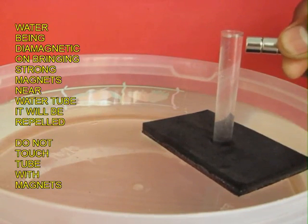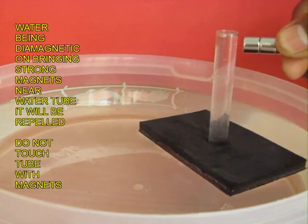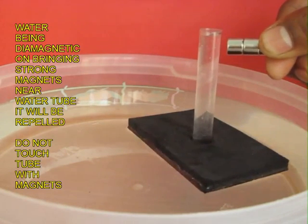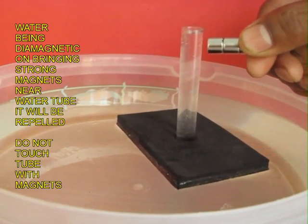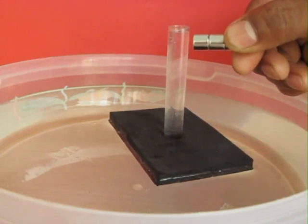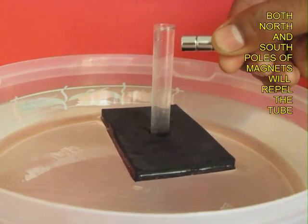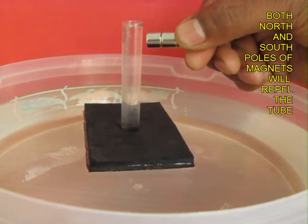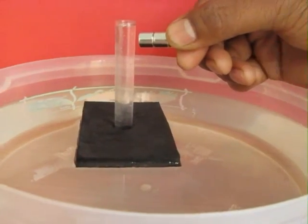The strong magnets will repel the water and the test tube would start going the other way. This small experiment demonstrates the diamagnetic nature of water, and both the north and the south poles of the magnets will repel this test tube.